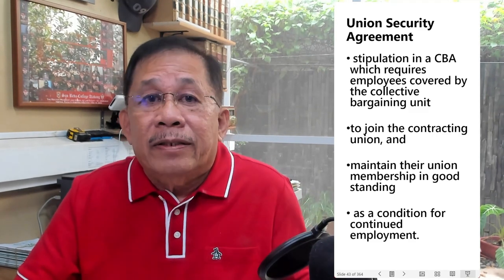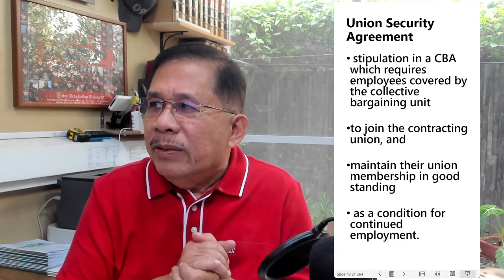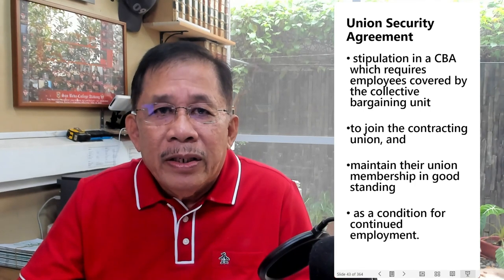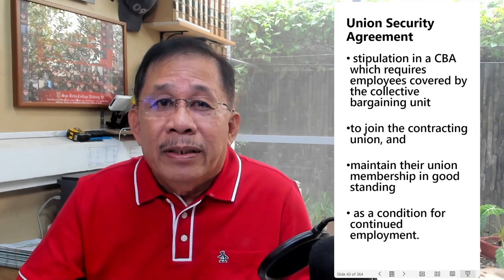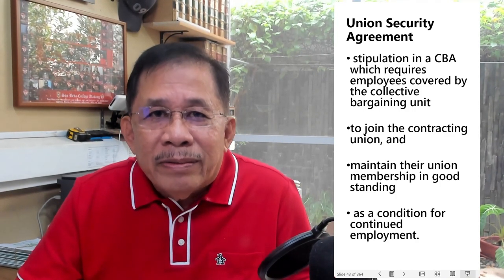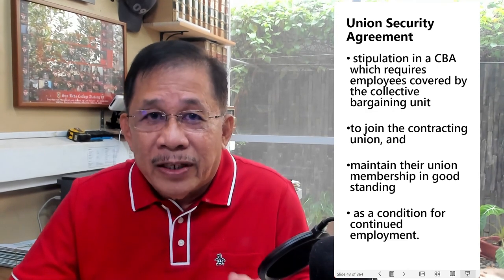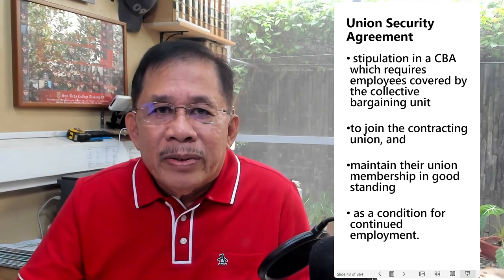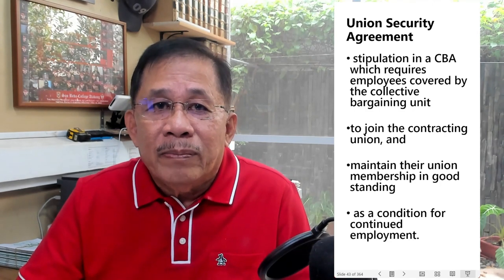A union security agreement is a stipulation in a CBA which requires employees covered by the collective bargaining unit to join the union — the contracting union, the one with the CBA, the certified bargaining agent — and maintain their union membership in good standing as a condition for continued employment.